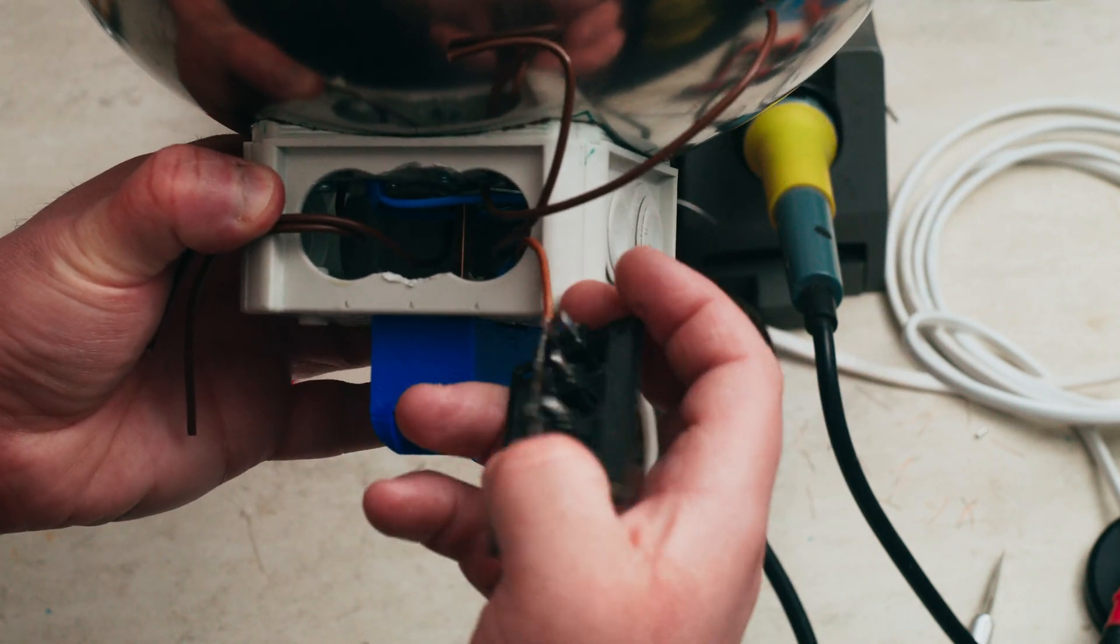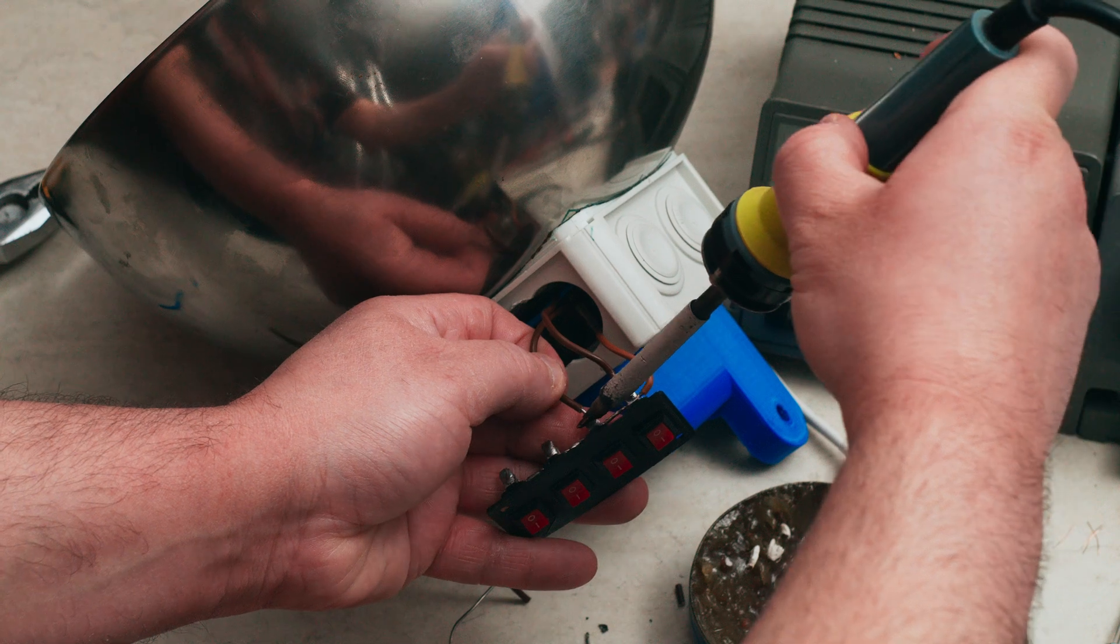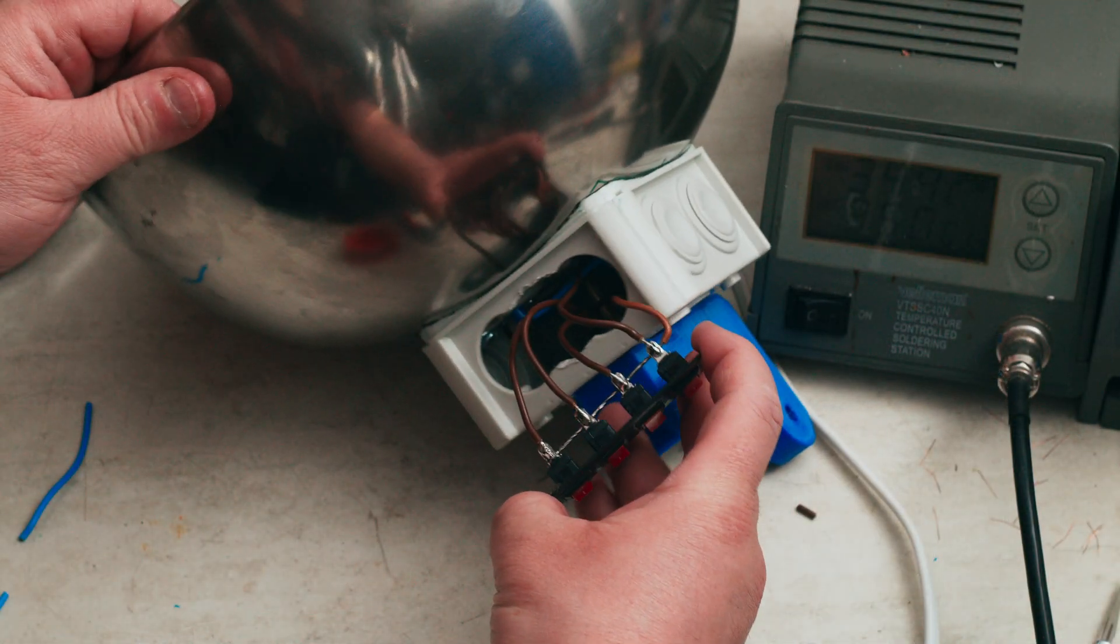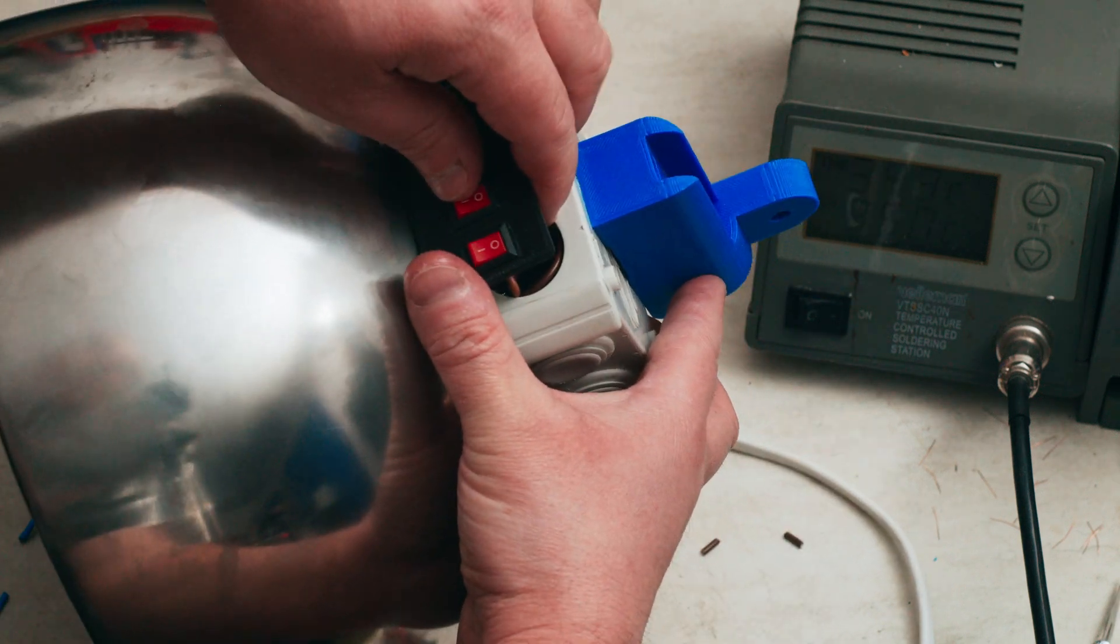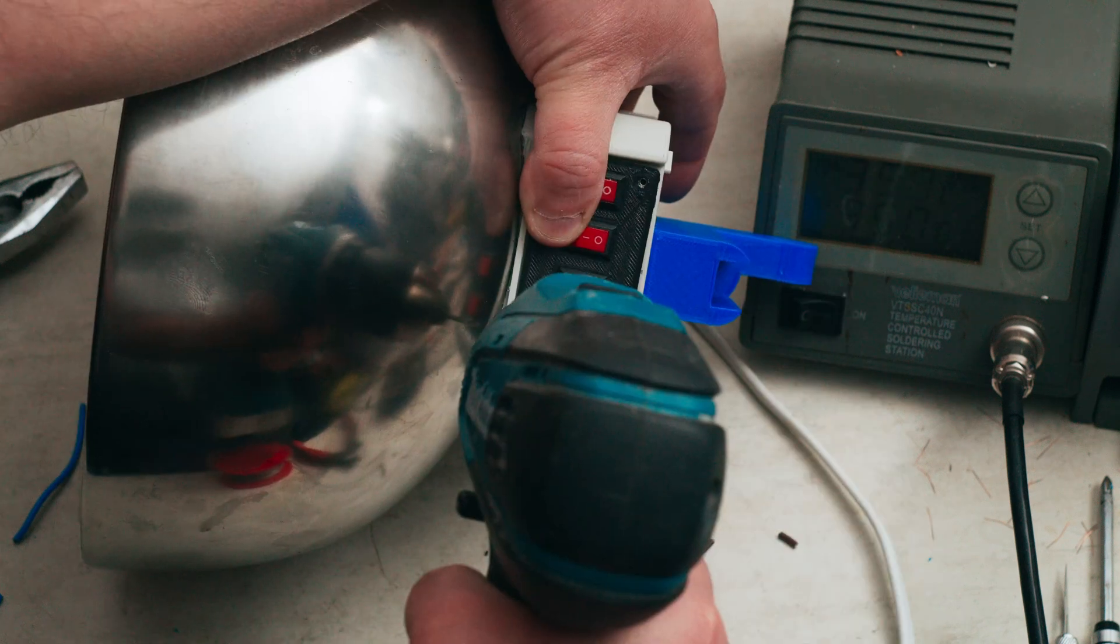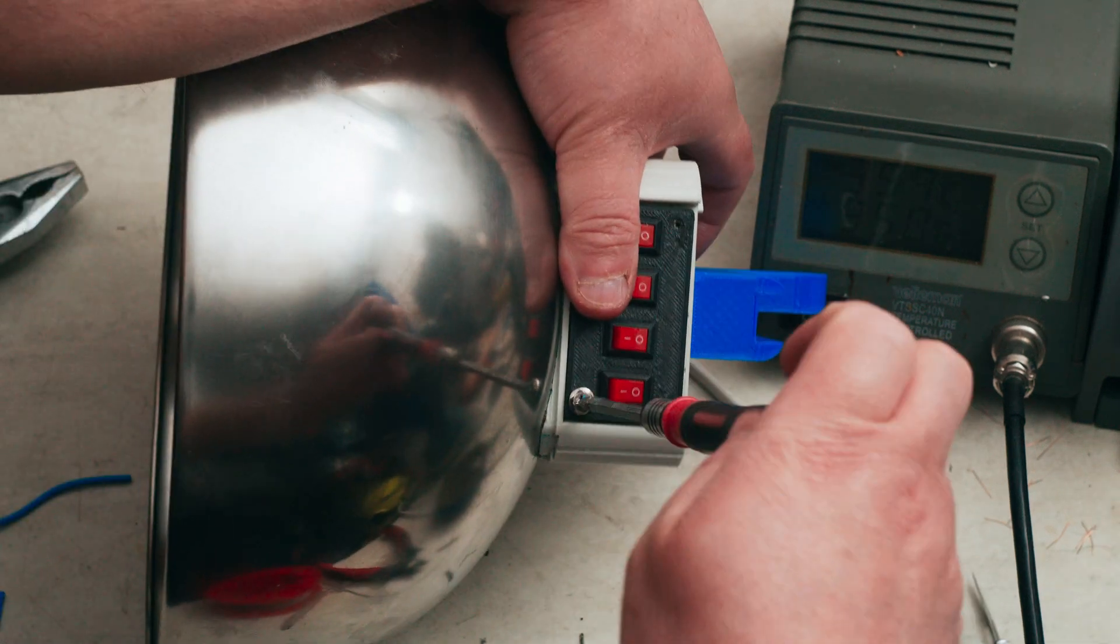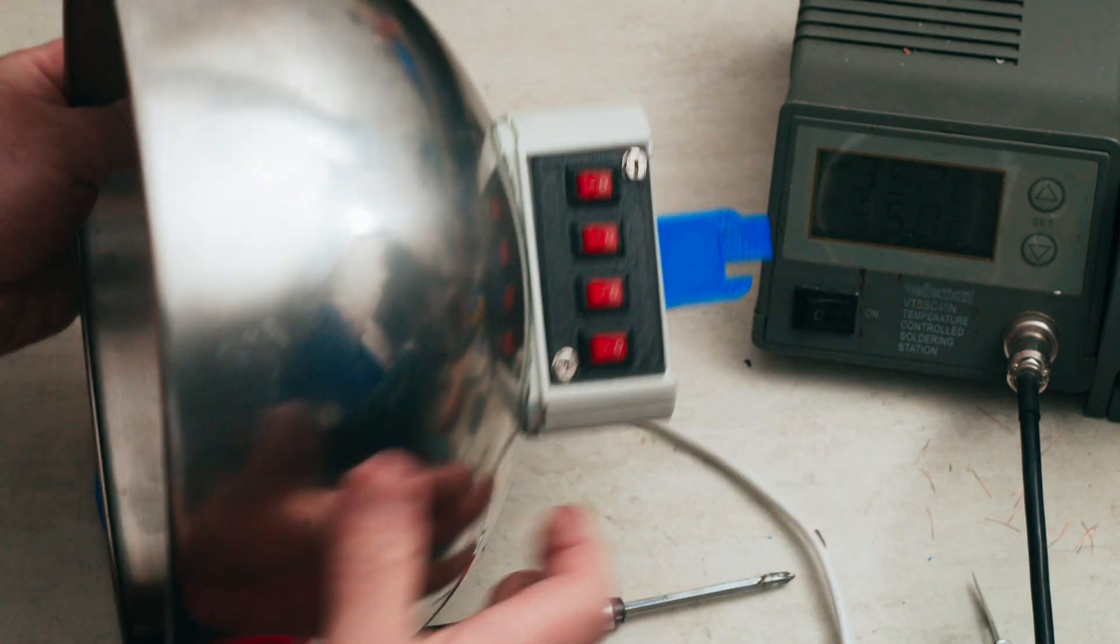Then, trim, tin and solder the live wires to the switches. Wiring done. Gently fit the faceplate to the junction box and drill two 2mm holes. Secure the faceplate with two screws. I used computer screws as I had them laying around.